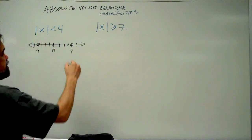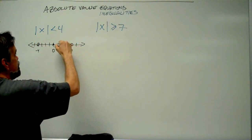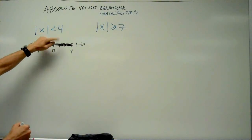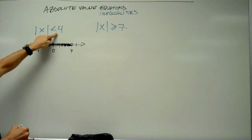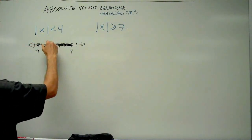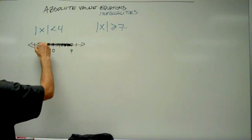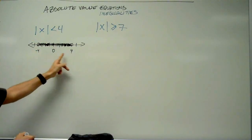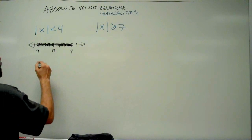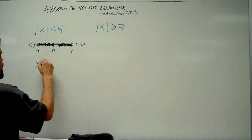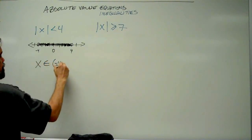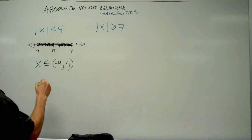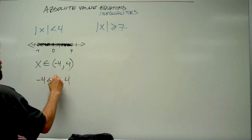5 is also not in there, so it's basically everything to the left of 4. But the absolute value of negative 3 is 3, which is less than 4 — that's good. The absolute value of negative 4 is 4, which is not less than 4, so we have to stop before we get to negative 4. So the absolute value of x less than 4 implies x has to be between negative 4 and 4. In interval notation, x is in the set from negative 4 to 4.